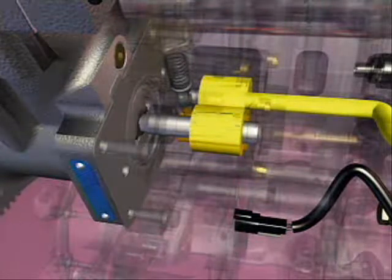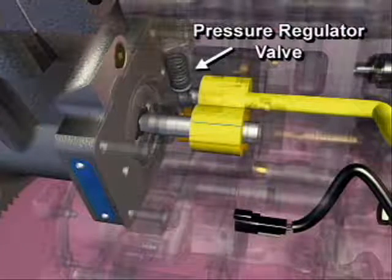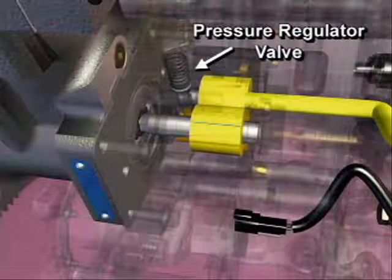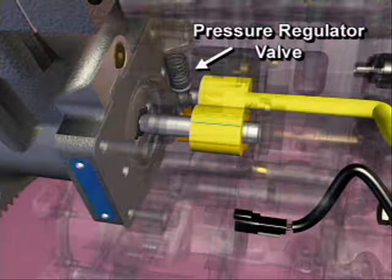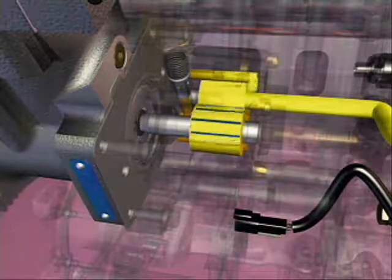Before the fuel leaves the gear pump, it passes a pressure regulator valve. When fuel pressure is above 175 psi, it acts against spring tension to open the valve. The fuel is returned to the inlet side of the gear pump.